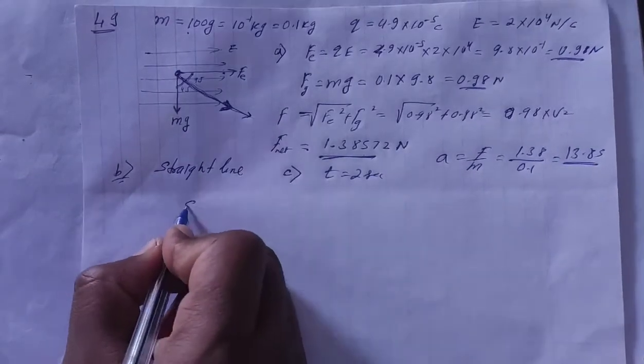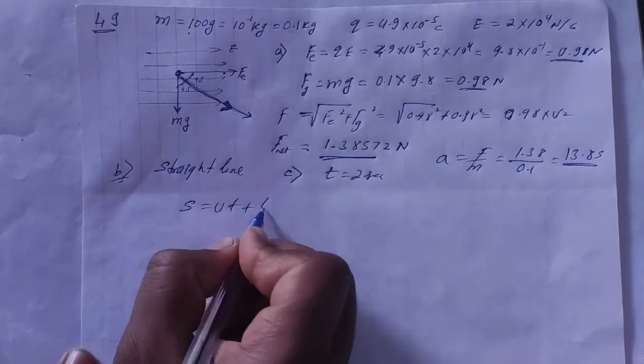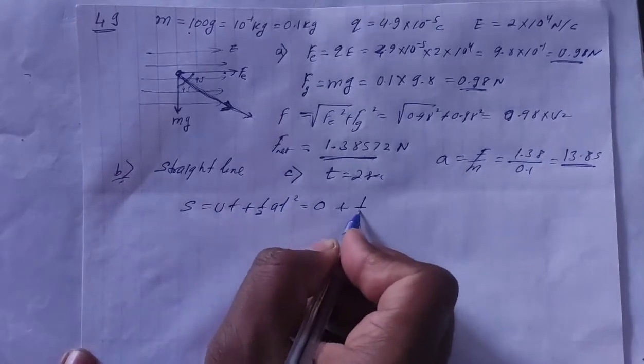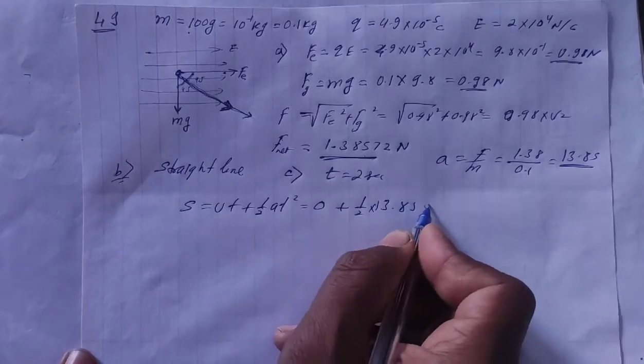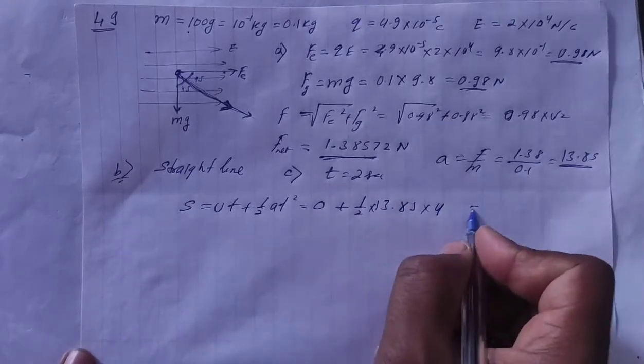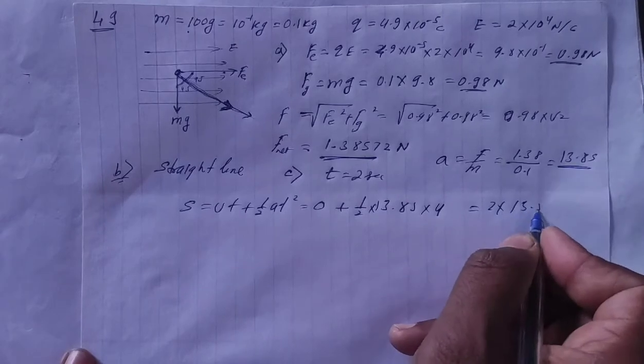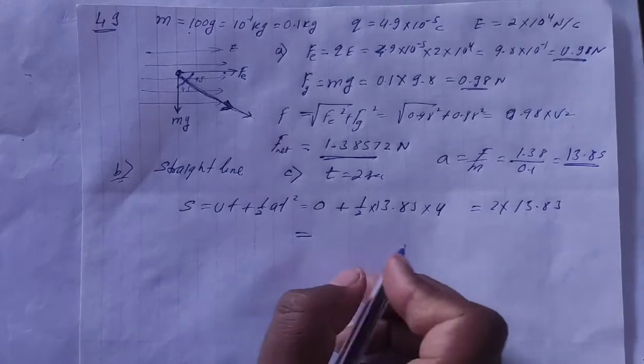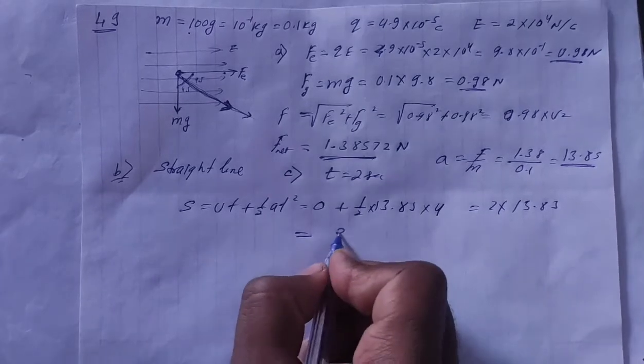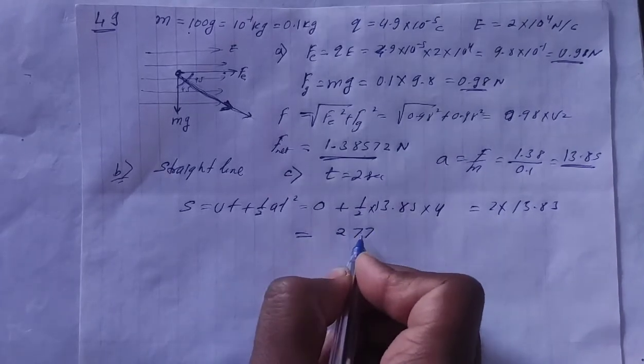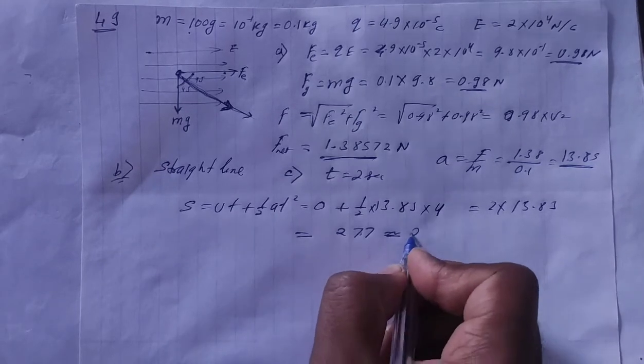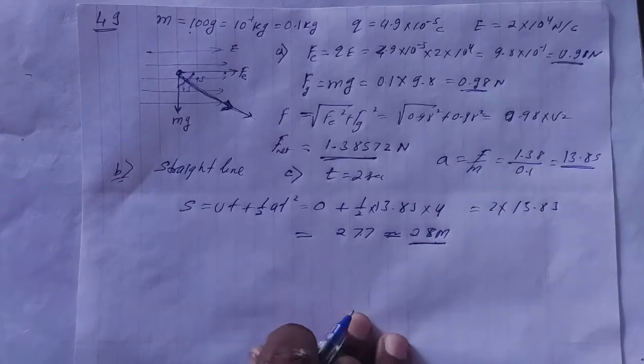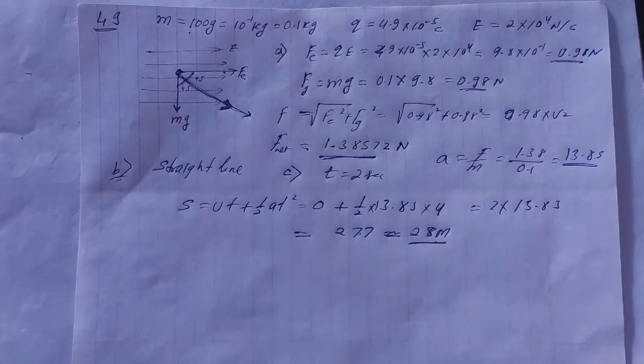Apply the second equation of Newton. S is equal to ut plus half at square. U how much is it? Zero. Plus half. This is how much? 13.85. And this will be 4. So this will be 2 into 13.85. If we solve this further, then you will get 27.7. 27.7. Or if you want to take approximately, then how much will you take? 28 meter. 28 meter. How much distance will it travel? 28 meter.